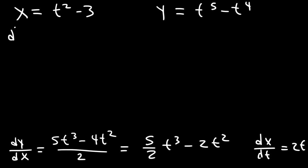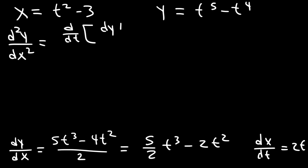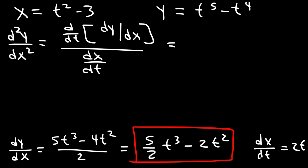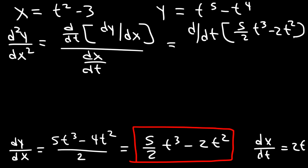So now let's find the second derivative, d²y/dx². That's equal to the derivative with respect to t of the first derivative dy/dx, divided by dx/dt. That's the formula to find a second derivative in parametric form. So we know dy/dx — that's 5/2 t cubed minus 2t squared — and dx/dt is just 2t, so we put that in the bottom.